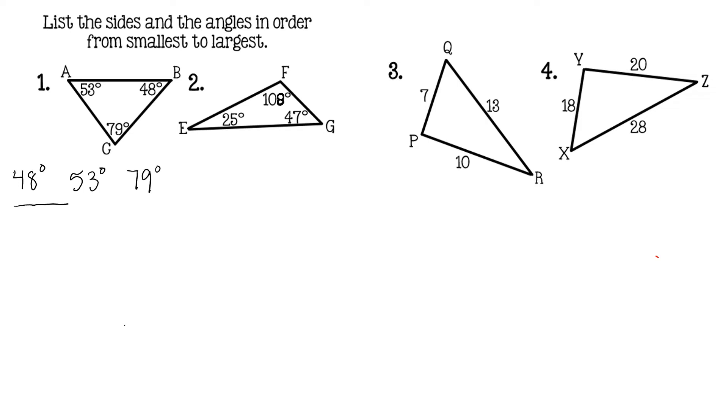So now it's easy to list from there the corresponding angles. So 48 is angle B, 53 is angle A, and 79 is angle C. So now I've listed them from least or smallest to largest.